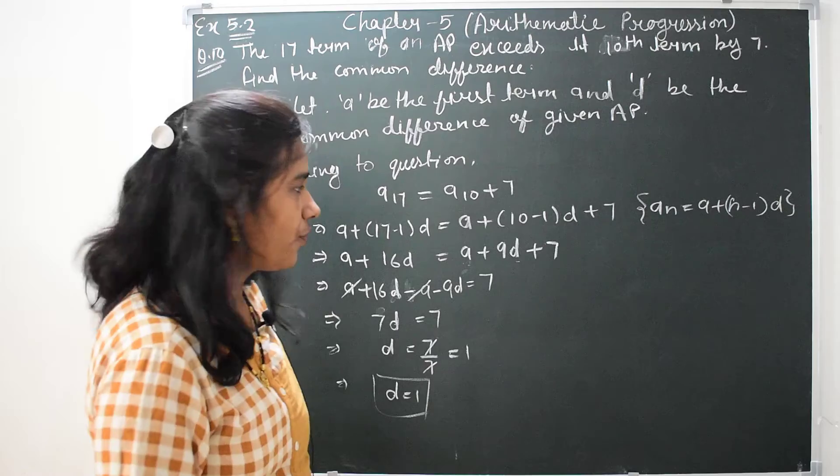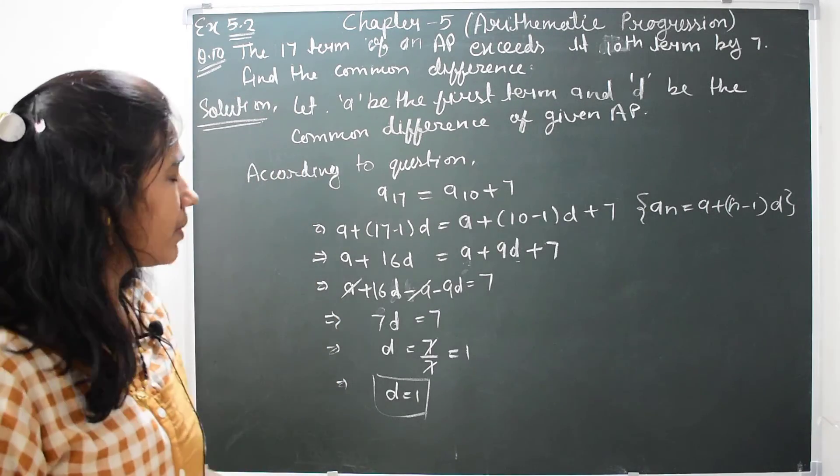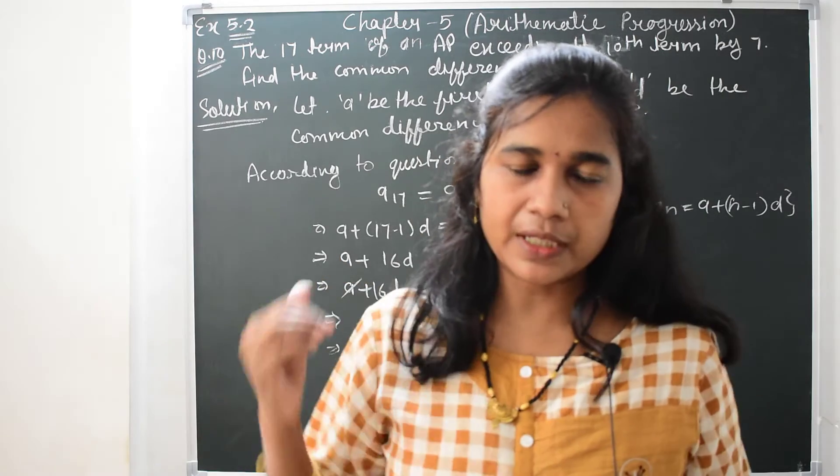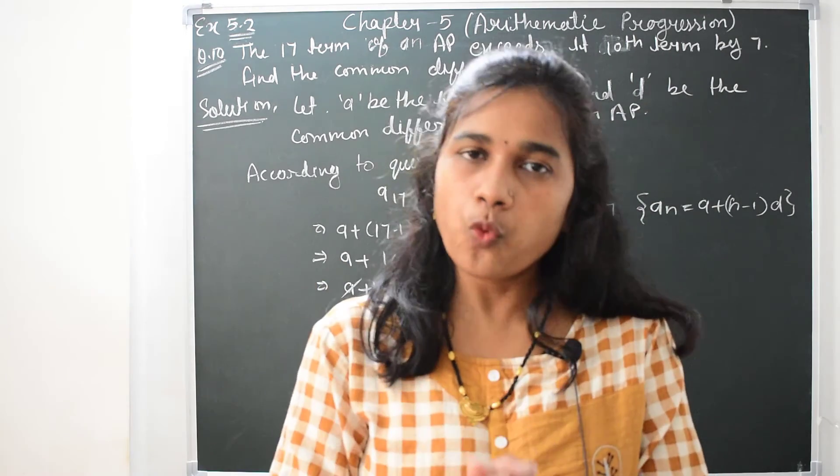The common difference of the given AP is 1. Whatever arithmetic progression satisfies this condition, its common difference will be 1.